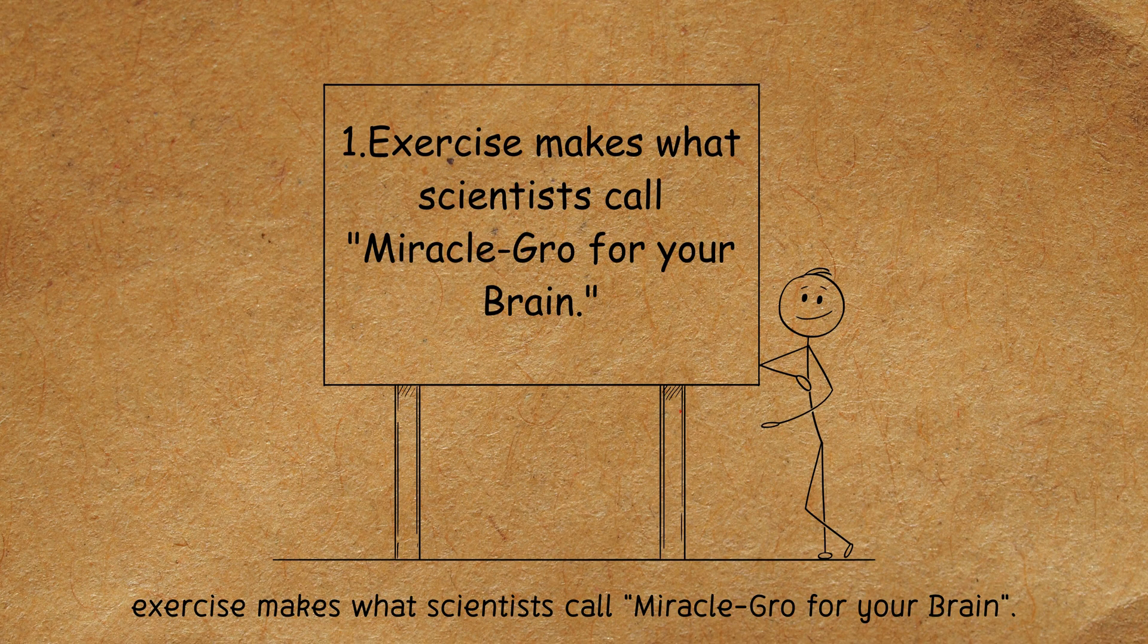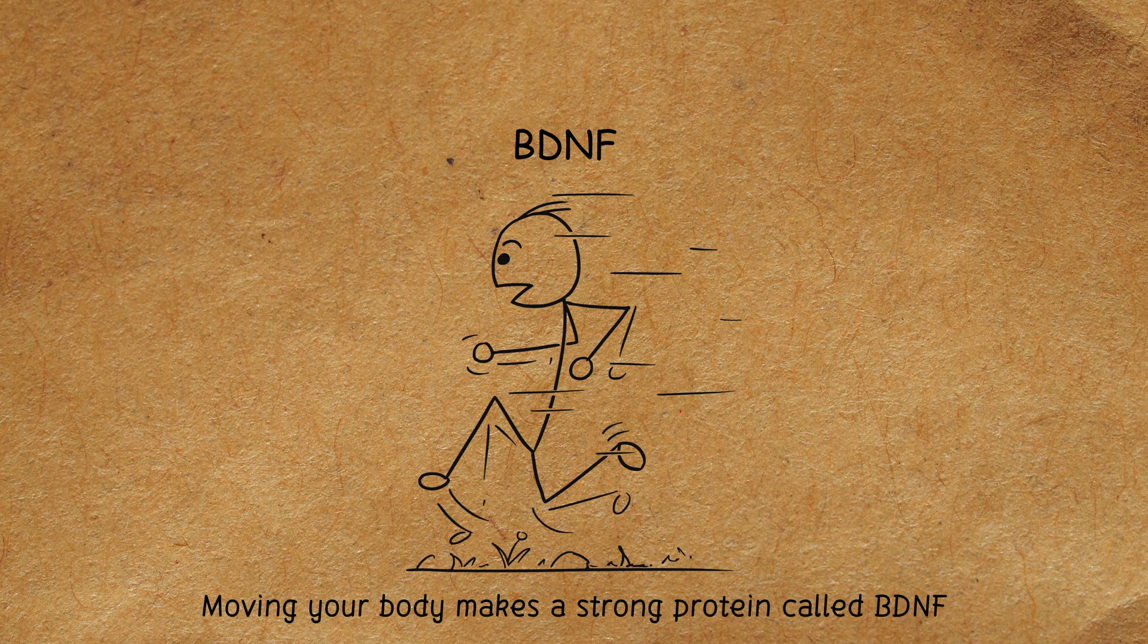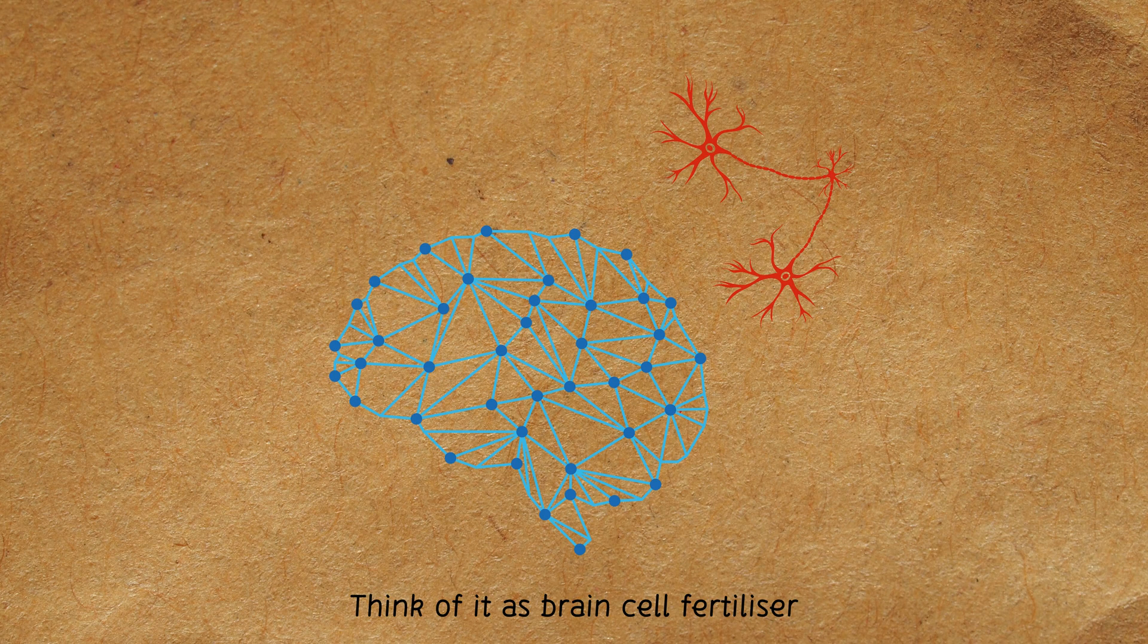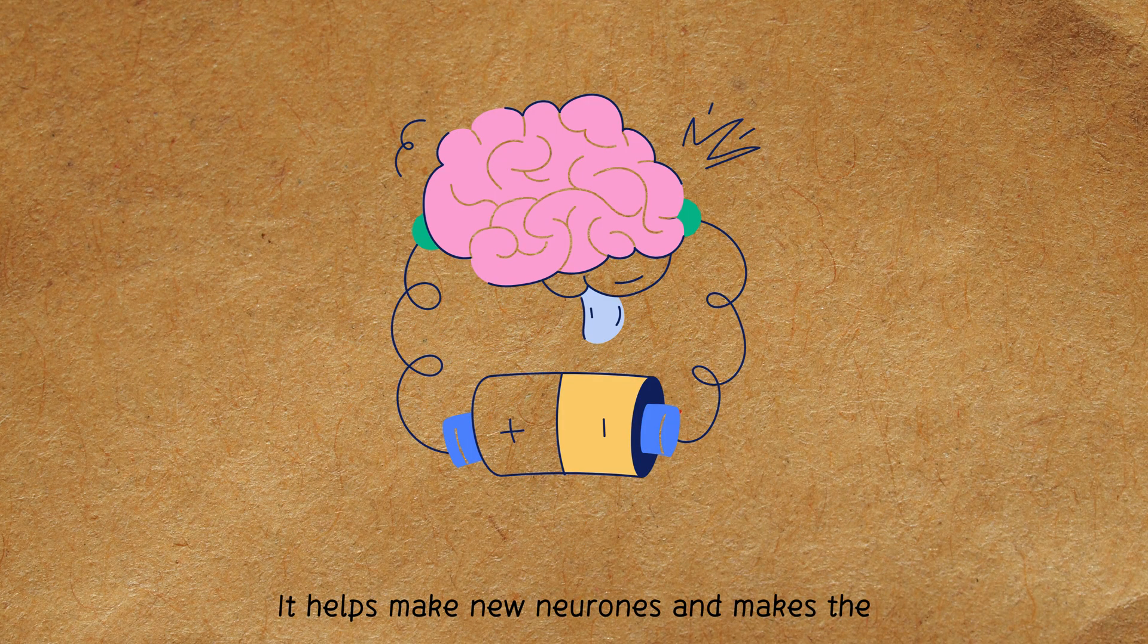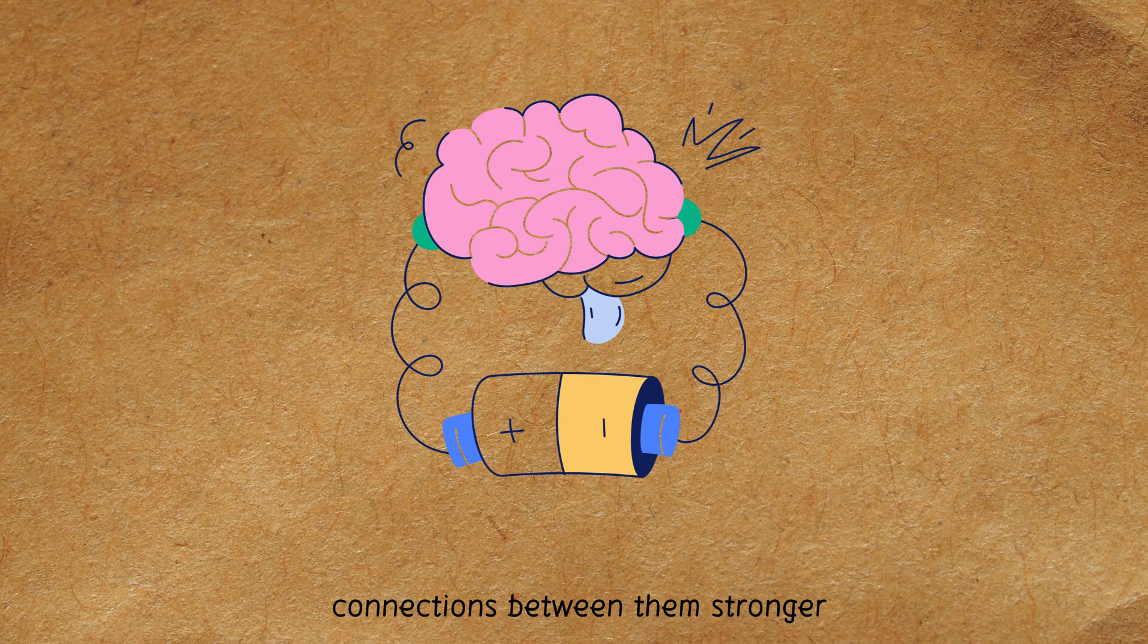First, exercise makes what scientists call miracle grow for your brain. Moving your body makes a strong protein called BDNF. Think of it as brain cell fertilizer. It helps make new neurons and makes the connections between them stronger.